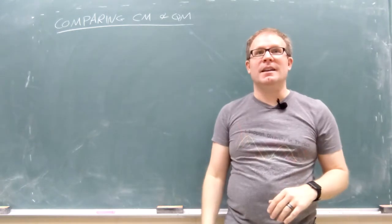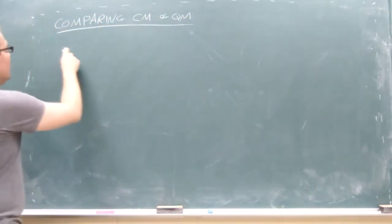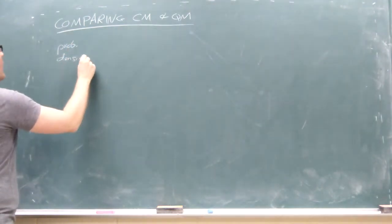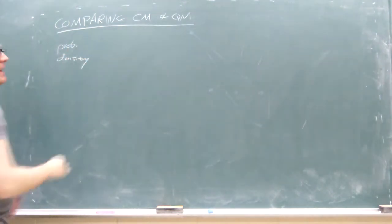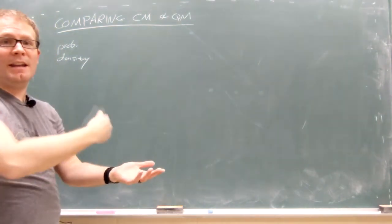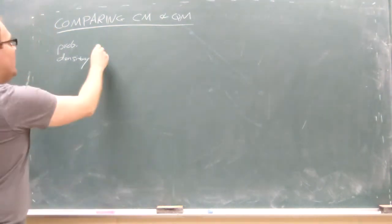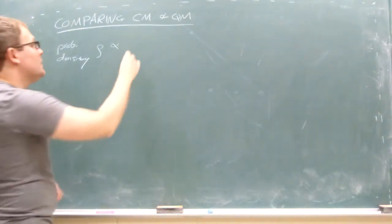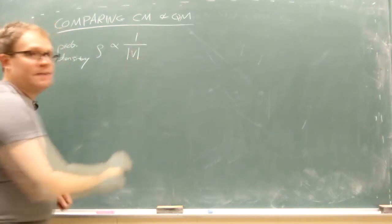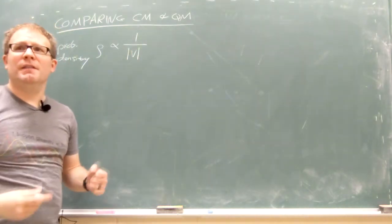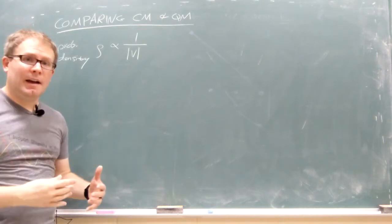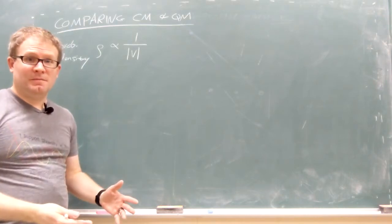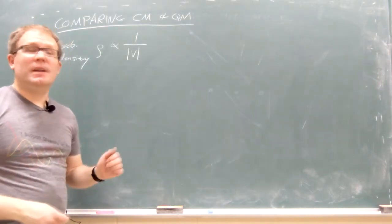The classical probability density — roughly speaking, how likely you are to find the particle at each location x — is given the symbol ρ. It turns out it's proportional to one divided by the velocity. That might seem weird at first, but think of it this way: the particle is going to spend less time at a point in space where it's traveling faster.